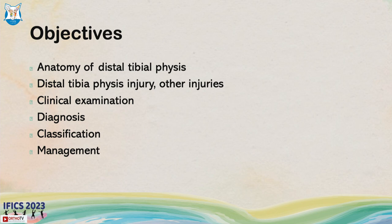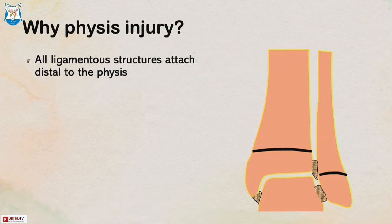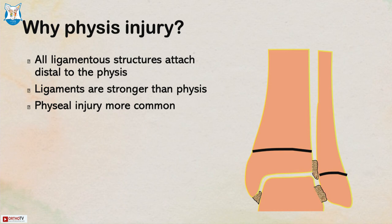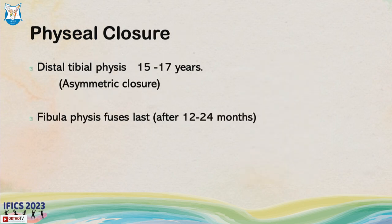We'll look at anatomy, clinical examination, diagnosis, classification, and management. Ankle physeal fractures are very common in adolescents — these are called transitional fractures. Lots of ligament structures attach around the ankle distal to the physis, making the ligaments stronger than the physis and therefore physeal injuries more common.